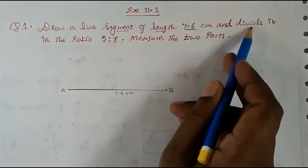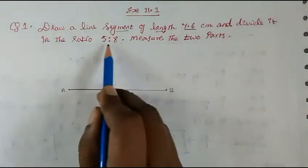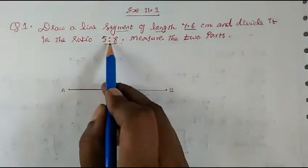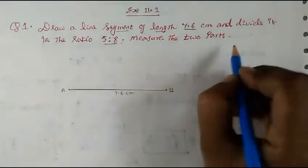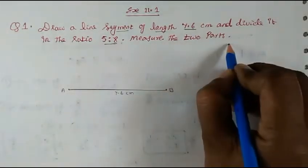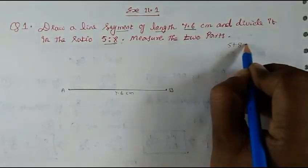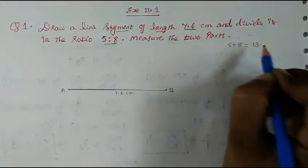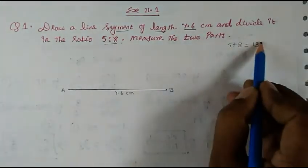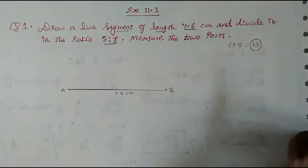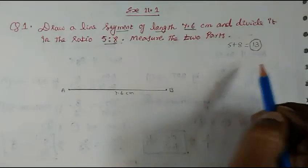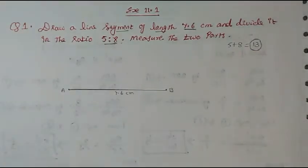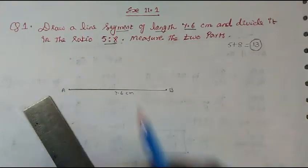Next, we have to divide it in the ratio 5:8. Before that, we do some calculation: 5 + 8 = 13. So first we will draw and divide into 13 equal parts.